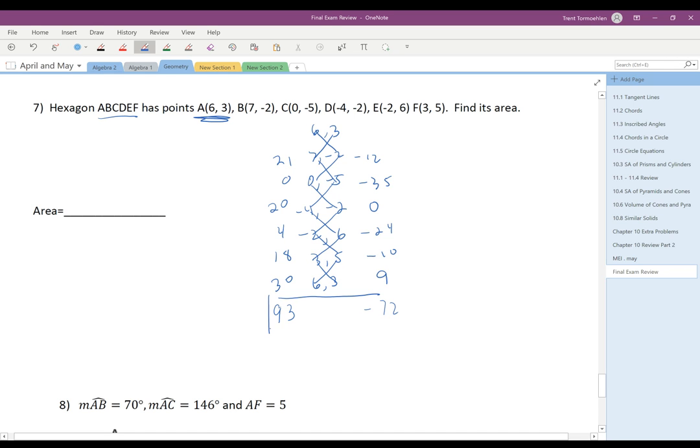The way we use those two column sums to find the answer is you take one-half times the absolute value of the difference. So we do 93 minus -72, that gives us 165, and then we multiply that times one-half. One-half times 165 is 82.5.